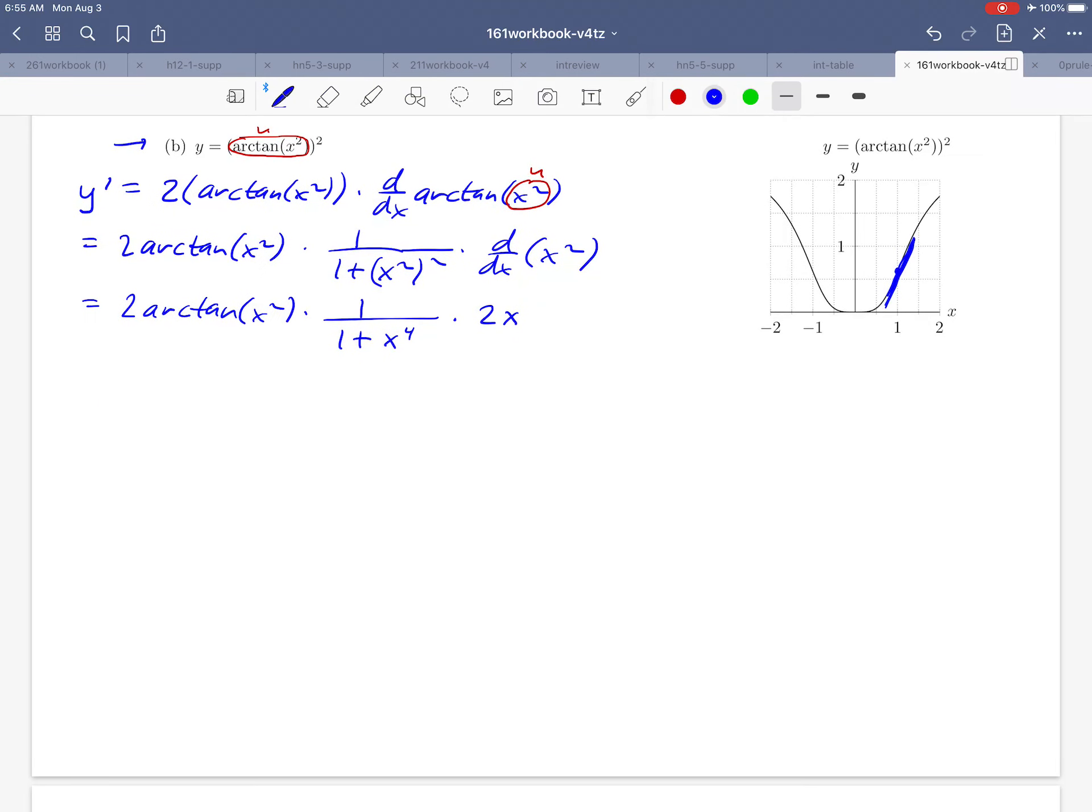Normally we don't make a big deal out of simplifying, but in this case we're going to need to substitute a value of x, so it's probably to our advantage to simplify. We've got a 2 out in front and a 2x here. We can multiply those together to get 4x and put that into the numerator of our fraction.